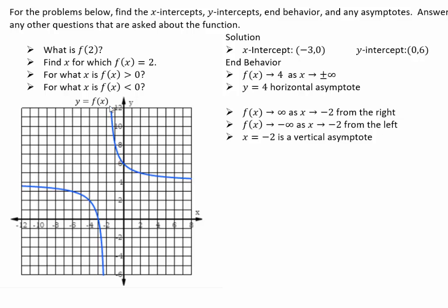So that's the end behavior. Let's take a look at f of 2. x equals 2 — go up to the graph and over, you see it's 5. So f(2) equals 5. You want to know for what x values is f(x) equal to 2. So we find y equals 2 and go left and right. If you go to the left, you can see x equals negative 4 gives you that — so f(negative 4) gives you a y-coordinate of 2.